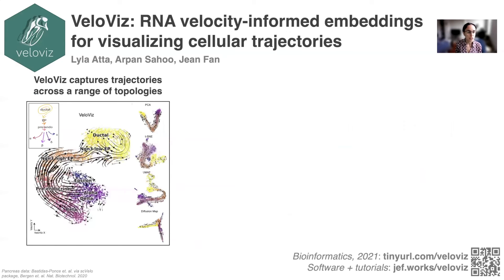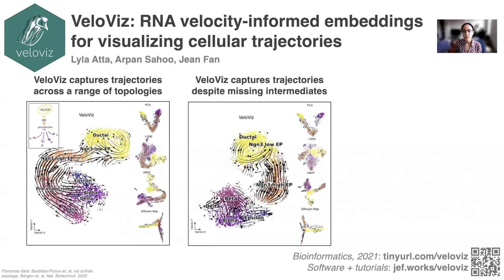We use VeloViz to visualize single-cell state trajectories in pancreas development, and we find that it is able to capture expected cell state transitions across a variety of different topologies, including cycling and branching. It is also able to capture these cell state transitions even when intermediates are missing, which can happen in datasets with disproportionate cell sampling or rare intermediates.